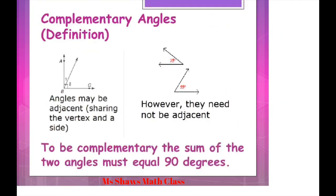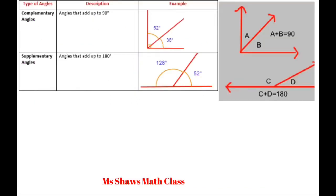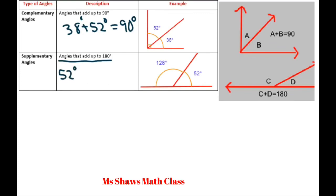Finally, a review. Complementary angles definition: angles may be adjacent — sharing a common vertex — which is what you'll usually see. However, they need not be adjacent; sometimes complementary angles are separate. The sum must equal 90 degrees. Our next video is going to be on supplementary angles — they add up to 180. For example, 38 plus 52 equals 90 degrees, and 52 plus 128 degrees equals 180 degrees. That's it — thank you, have a nice day, bye bye.